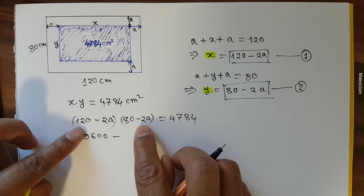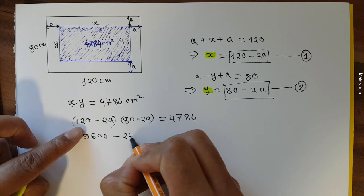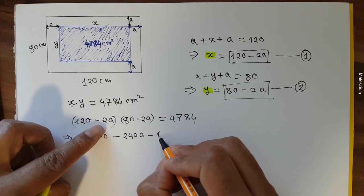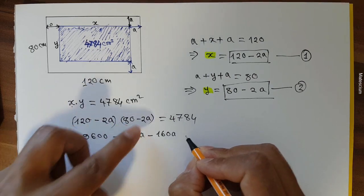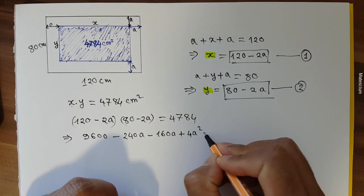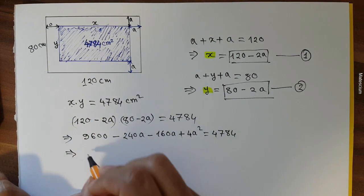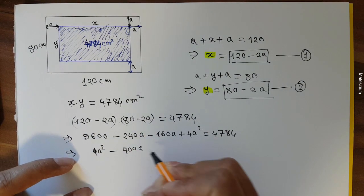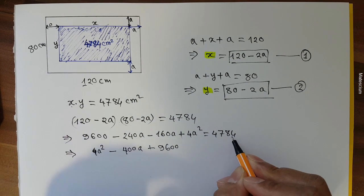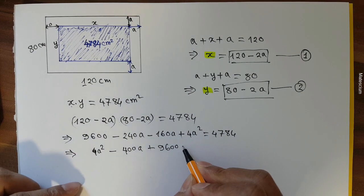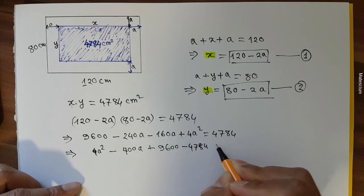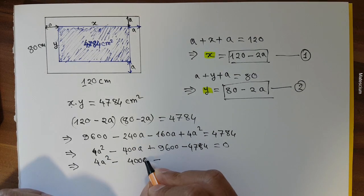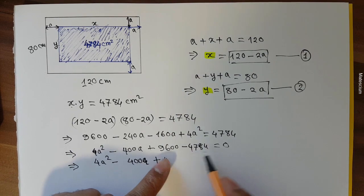Expanding this equation: 120 times 80 is 9600, minus 120 times 2a which is 240a, minus 2a times 80 which is 160a, plus 2a times 2a which is 4a squared, equals 4784. Rearranging: 4a squared minus 400a plus 9600 minus 4784 equals 0.